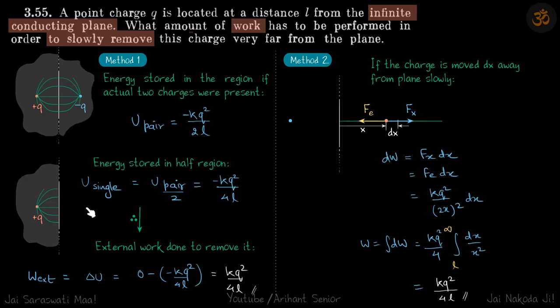Therefore, external work done to remove it is W_external equals delta U. Finally, when you have taken it to infinity, there is no field lines, so final U is 0. Final U minus initial U is equal to work done by external agent, which is kQ² by 4l, which is our answer.